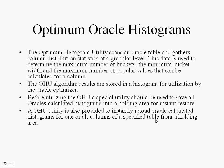The Optimum Histogram Utility scans an Oracle table and gathers column distribution and statistics at a very granular level. This data is used to determine the maximum number of buckets, the minimum bucket width, and the maximum number of popular values that can be calculated for a column in an Oracle table. The OSU algorithm results are stored in a histogram for utilization by the Oracle Optimizer.